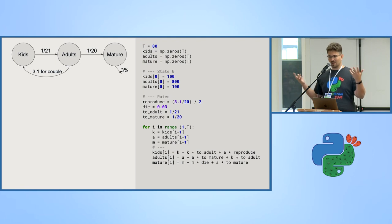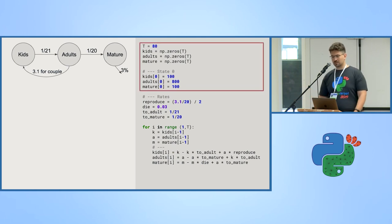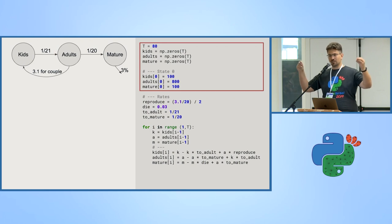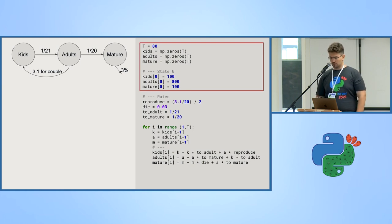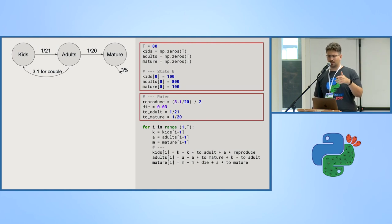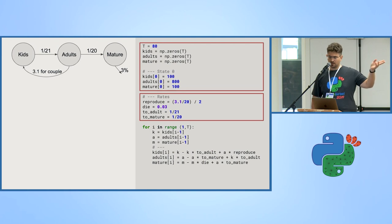We call them timestamps, but let's imagine those are years — you can work in weeks, months, however you choose. In code: we start with state zero, 100 kids, 800 adults, 100 mature people, initialized for 80 years. Then we define all the parameters: the reproduction rate is 3.1 divided by 20 years, divided by 2 for male and female. Then we have the 3% dying rate, and the rates of becoming an adult and becoming a mature person.